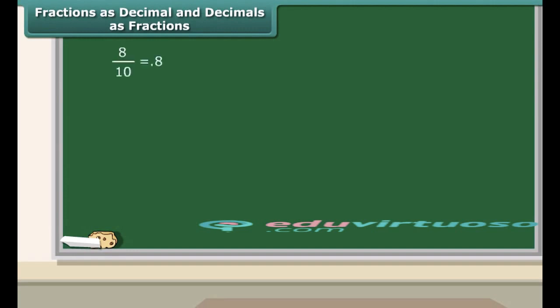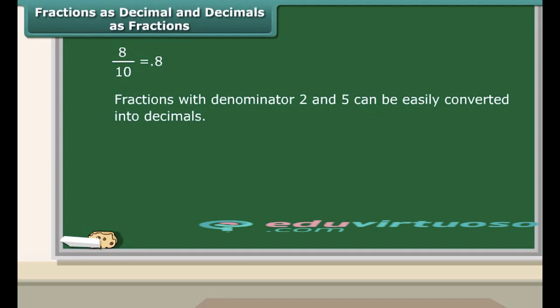We know that a fraction with denominator 10 can be represented using decimals. Now let us learn to convert fractions with denominator 2 or 5 into decimals. Take the example of 12 upon 5.